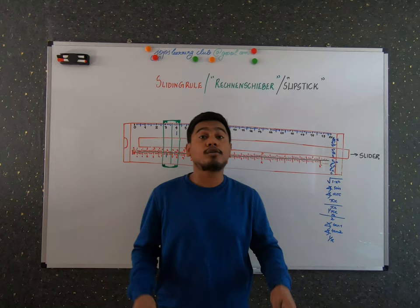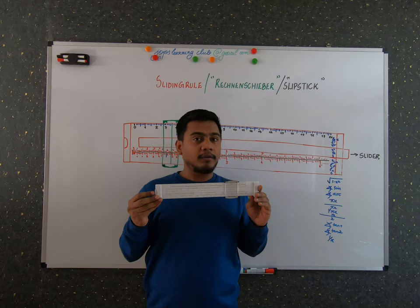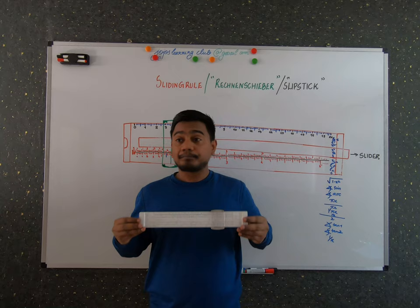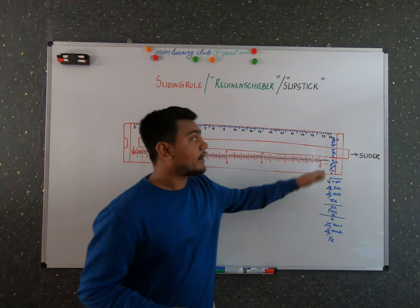So this is one kind of sliding ruler, and I actually borrowed it from my colleague just to show you how people used to do these calculations. In this sliding ruler, you can see that there are different scales. I have drawn only two scales in my figure.